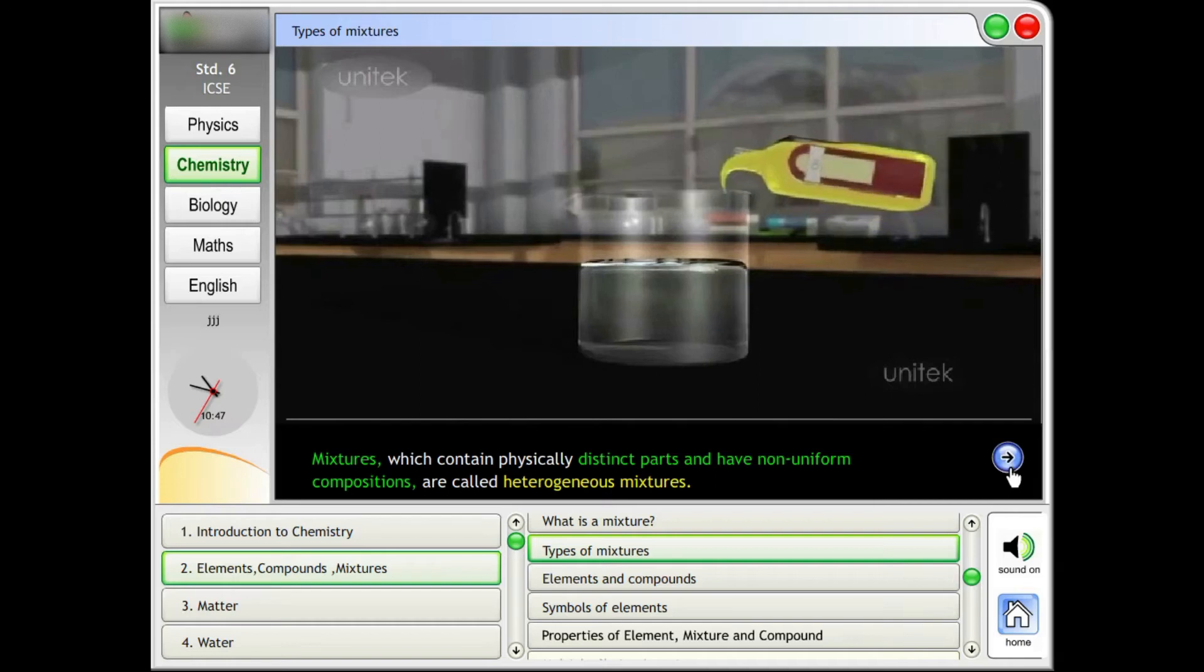Mixtures which contain physically distinct parts and have non-uniform compositions are called heterogeneous mixtures.